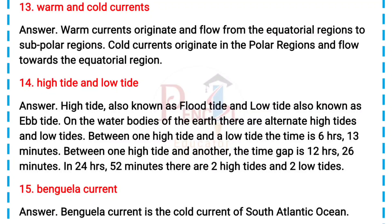14. High tide and low tide. Answer: High tide is also known as flood tide, and low tide is also known as ebb tide. On the water bodies of the earth there are alternate high tides and low tides. Between one high tide and a low tide the time is 6 hours 13 minutes. Between one high tide and another the time gap is 12 hours 26 minutes. In 24 hours 52 minutes there are two high tides and two low tides.